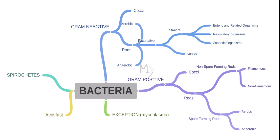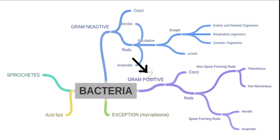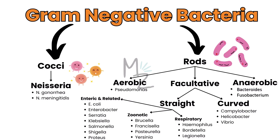Before talking about Pasteurella multocida in detail, we should know about bacterial classification. Bacteria are further classified into spirochetes, acid-fast bacteria based on acid-fast staining, and there's an exception — mycoplasma. Bacteria are also classified based on gram staining into gram-positive and gram-negative. Gram-negative bacteria are further subdivided into cocci, which includes Neisseria gonorrhoeae and Neisseria meningitidis, and also into rods.